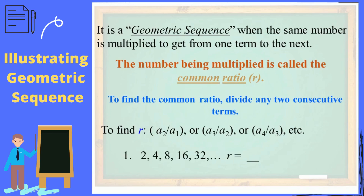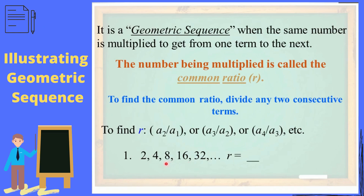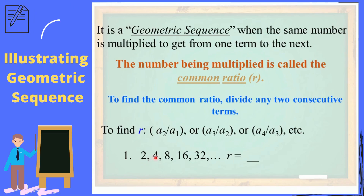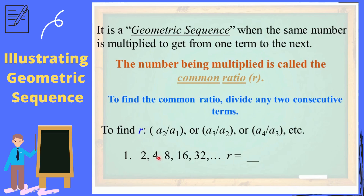Example. In the sequence 2, 4, 8, 16, 32, and so on, what is the common ratio? To find the common ratio, get the quotient of A sub 2 and A sub 1. So 4, which is A sub 2, divided by 2, which is A sub 1, is equal to 2.